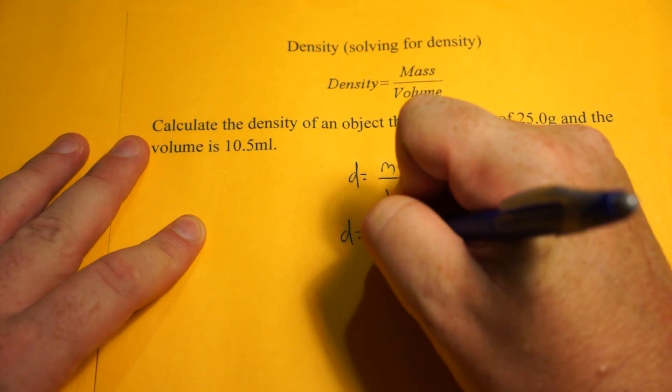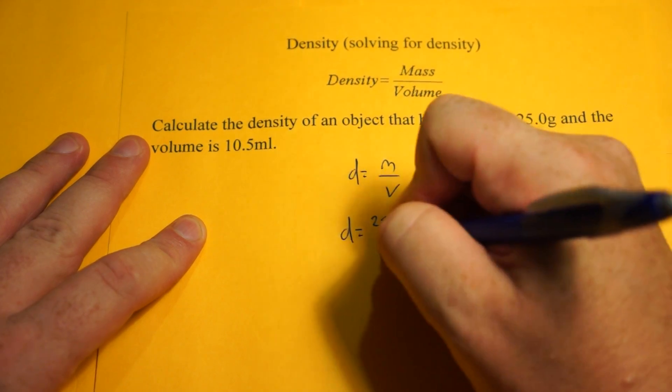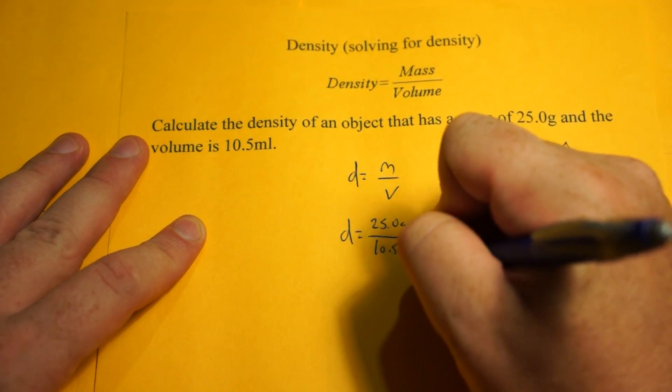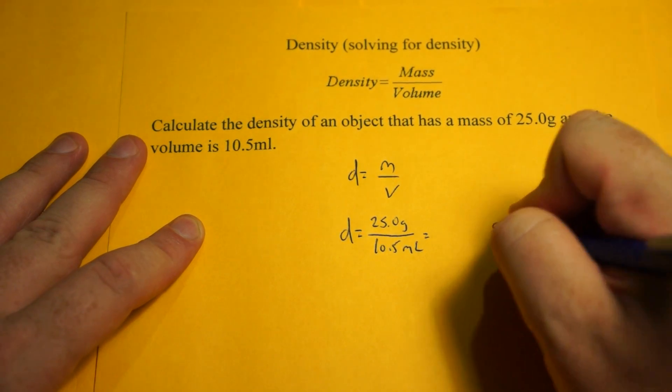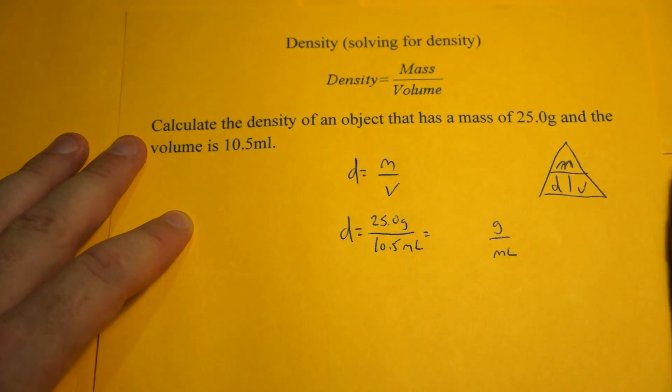Density equals our mass, which was 25 grams, 25.0 grams. Our volume was 10.5 milliliters. So our units for density is going to be grams per milliliter, and all I have to do is calculate the density.